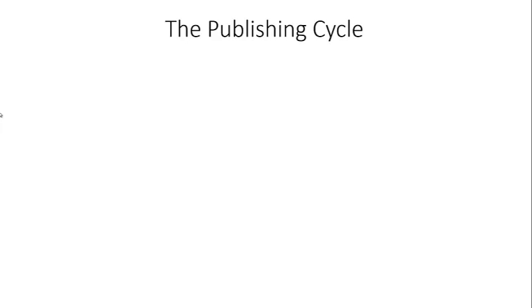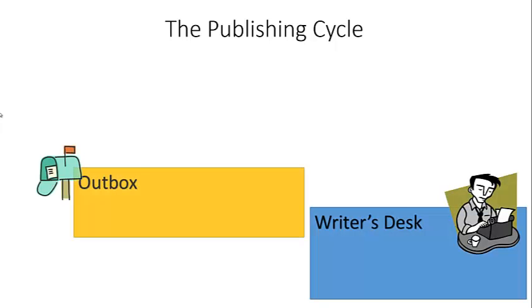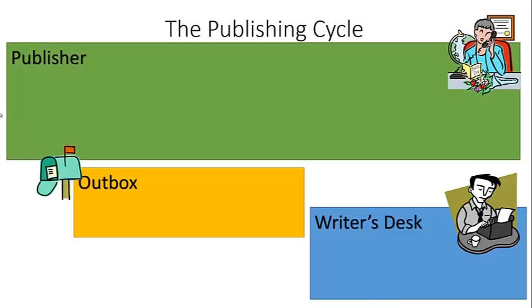We're going to bring everything together now, because we're using Git as an analogy for a publishing cycle. You have the working directory, which is your writer's desk. You have the staging index, which acts like your outbox or mailbox. And you have the publisher, which acts like a repository, where things are set and packaged. Hopefully this example will make things clearer, because I acknowledge it can be confusing to understand exactly how things work at first.